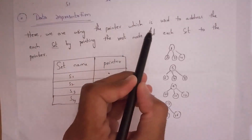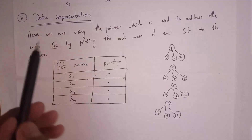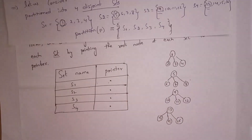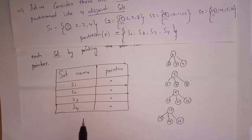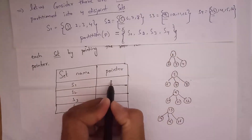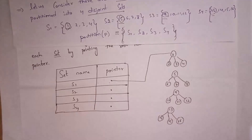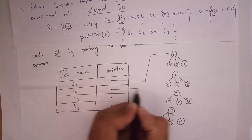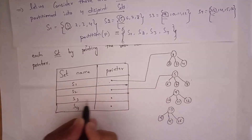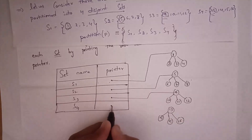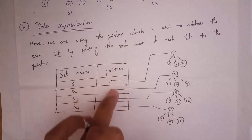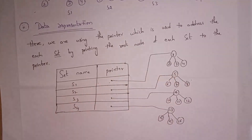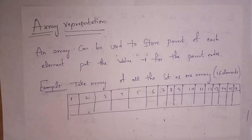Next I will explain data representation. Here we use a pointer to address each set by pointing to the root node of each set. The set names are S1, S2, S3, S4, drawn in a table. The pointer for S2 is connected to root node 5, S3 to root node 9, and S4 to root node 13. In data representation, the pointer connects to the root node of every set.